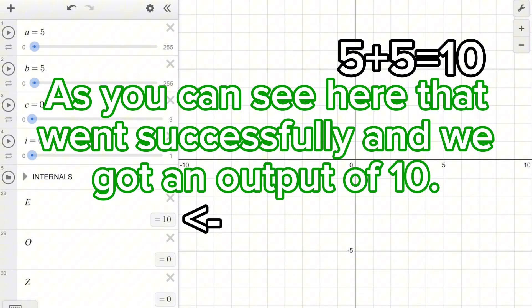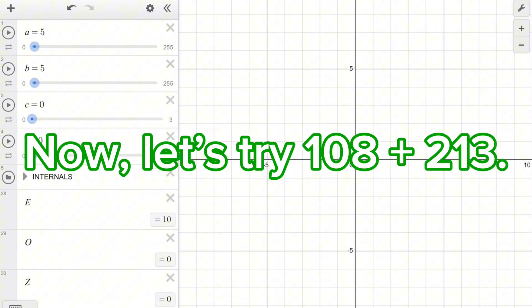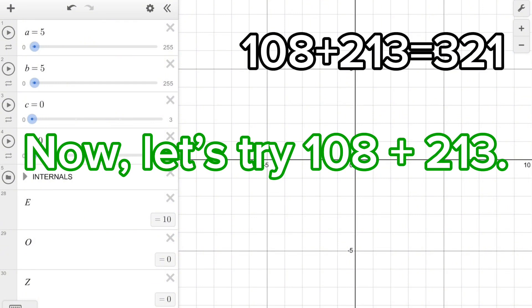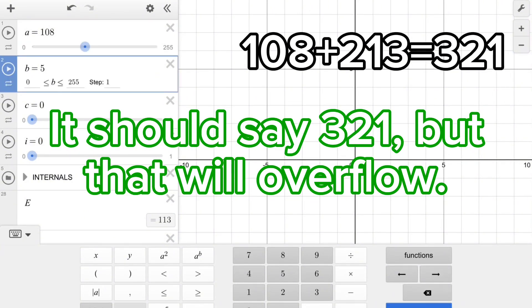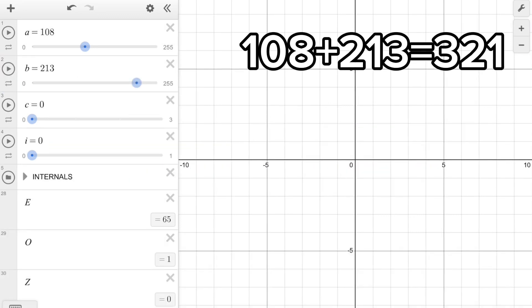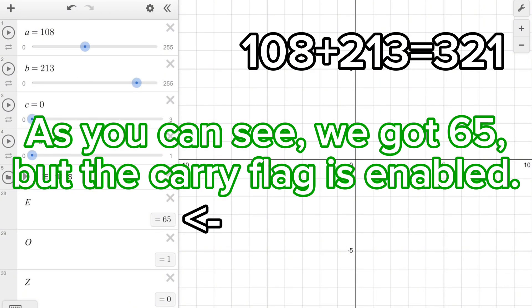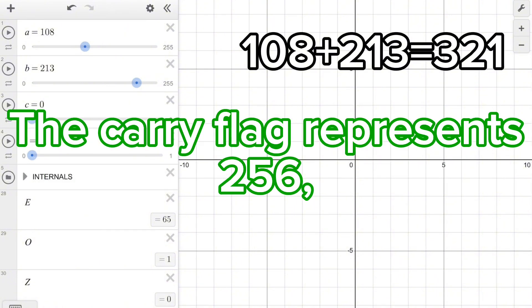As you can see, that went successfully and we got an output of 10. Now let's try 108 plus 213. It should say 321, but that will overflow. As you can see, we got 65 but the carry flag is enabled. The carry flag represents 256, and 256 plus 65 is 321.